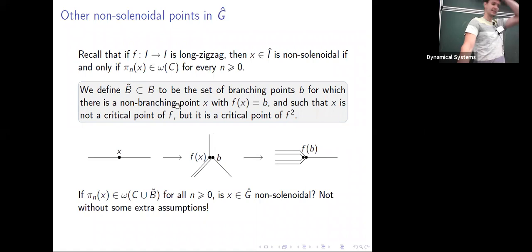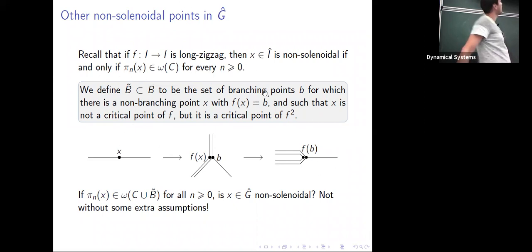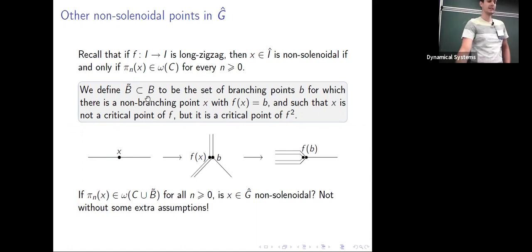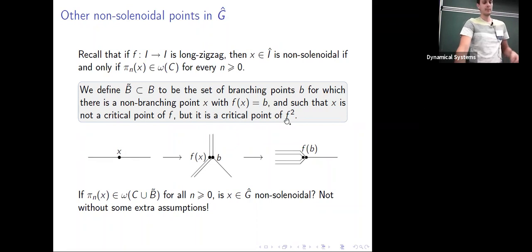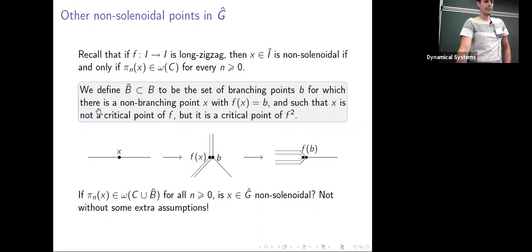Another important thing: we had to isolate the set of branching points that are special. Let B̃ be the set of branching points b for which we can find a non-branching point x that maps to b, and then in the second iterate creates a critical point. So B̃ captures branching points from which a critical point is born in two steps.